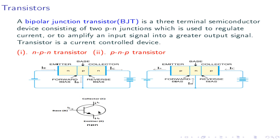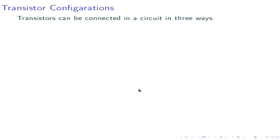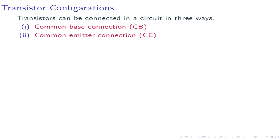The symbol of the NPN transistor, the PNP transistor, and one of the industrially available transistors, the BC-105. Transistor configurations — there are mainly three different transistor configurations: common base connection, common emitter, and common collector connections.